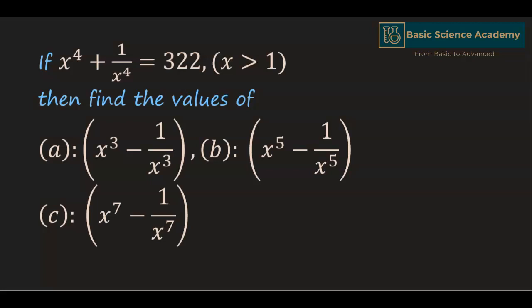In this video, we are going to solve the problem: if x to the power of 4 plus 1 divided by x to the power of 4 equals 322, where x is greater than 1, then find the values of x cubed minus 1 divided by x cubed, x to the power of 5 minus 1 divided by x to the power of 5, and x to the power of 7 minus 1 divided by x to the power of 7.